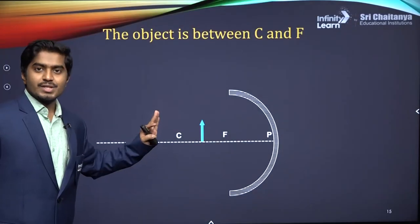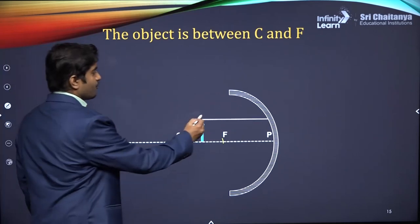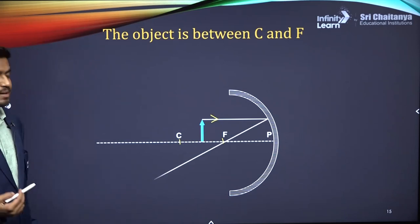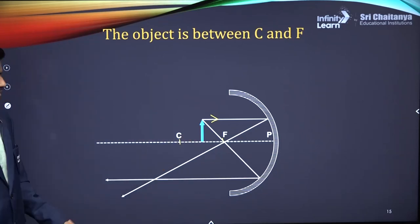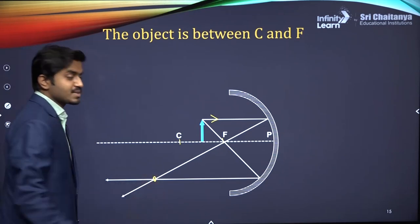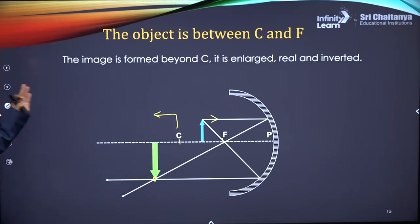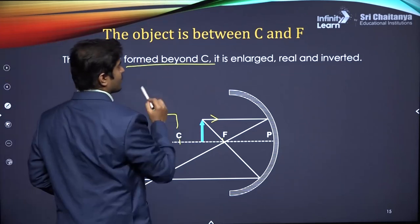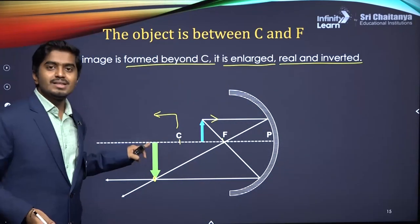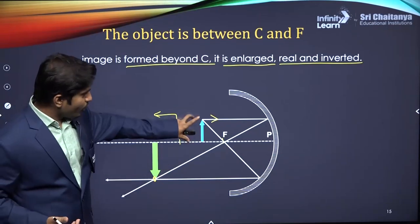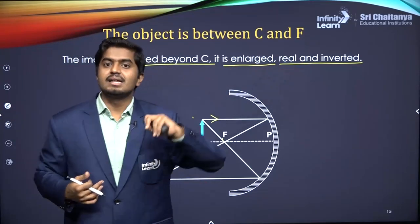Bring the object even closer — now between F and the center of curvature. The first incident ray is parallel to the principal axis, reflected through focus. The second passes through the focus, reflected parallel to the principal axis. These rays meet at a point beyond center of curvature. The image is enlarged, real, and inverted — you can see it is larger than the object.